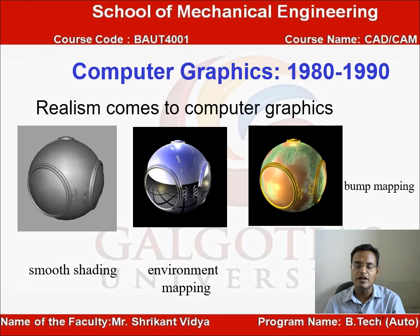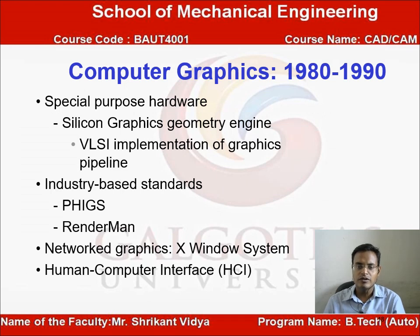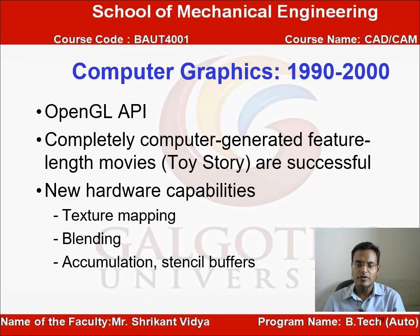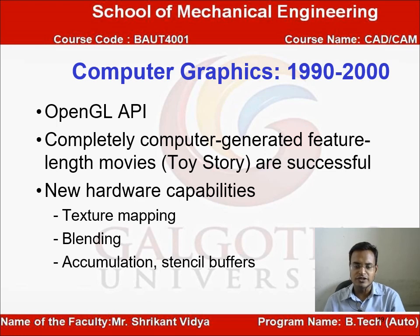In the history of computer graphics from 1980 to 1990, models began looking more realistic due to smooth shading and environment mapping. Special-purpose hardware came into picture — Silicon Graphics and geometry engines. PHIGS and extended graphics pipelines were implemented. After 1990, OpenGL was introduced, computer-oriented features became successful, Toy Story was produced, and new hardware capabilities such as texture mapping, blending, and accumulation buffers came into picture.